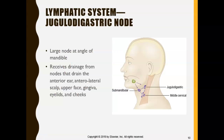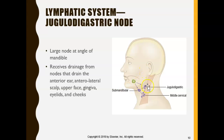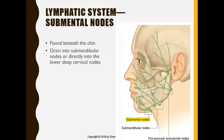The jugular digastric node is right near the angle of the mandible — the corner of the mandible. This is your jugular digastric node. We have many nodes within our head and neck area, and what lymph nodes do is filter out all the bad stuff.